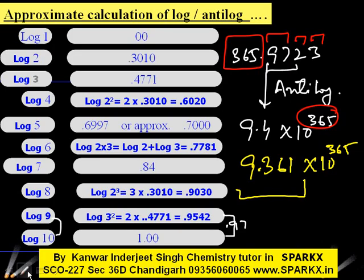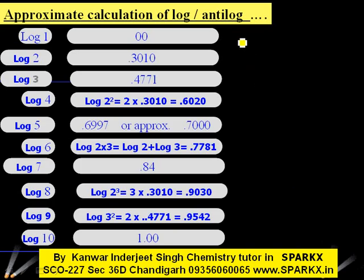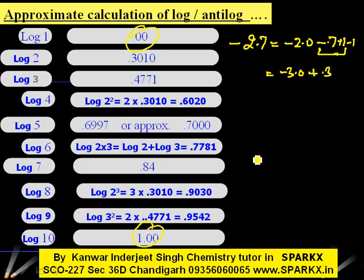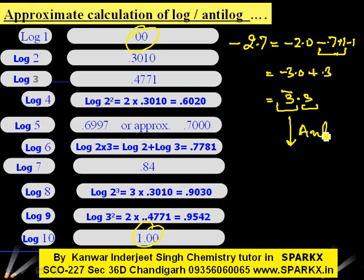The next main problem is the antilog of negative values. For example, −2.7: both the 2 and the 0.7 are negative, but we do not know the antilog of a negative mantissa. So we make the mantissa positive by adding +1 and −1. This gives us −3 + 0.3, which can be written as 3̄.0.3, meaning the characteristic is negative and the mantissa is positive. Now we can find the antilog of 0.3, which is 2.